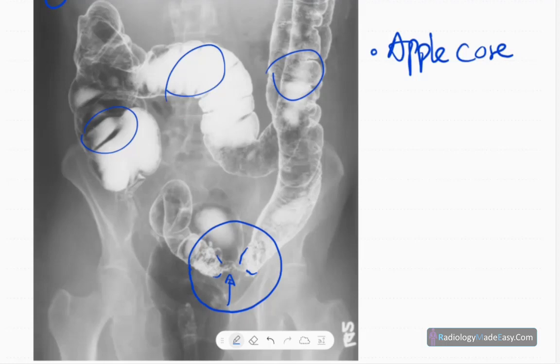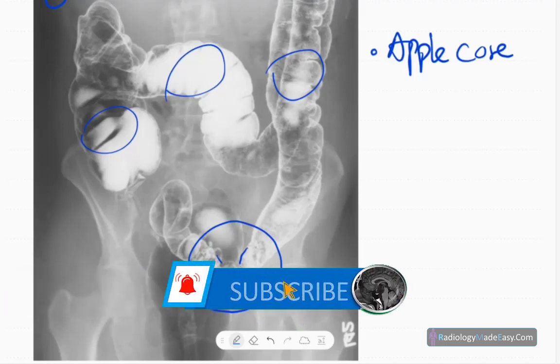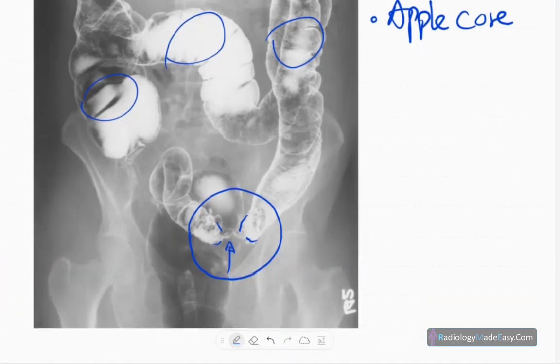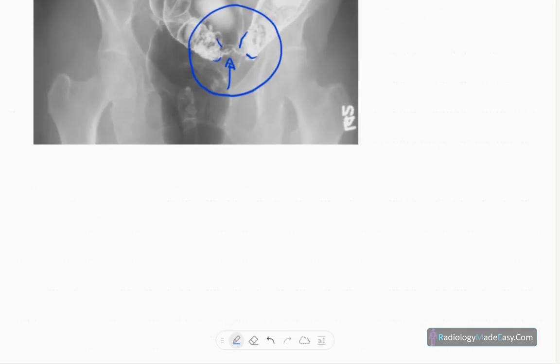Bones are normal, no lytic or sclerotic lesions in the bones. So there's a partial obstruction due to neoplasm in the proximal sigmoid colon. However, no evidence of complete bowel obstruction in the current study.